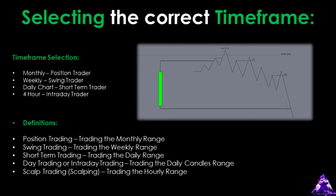Starting with the higher time frames, the first is the monthly chart or monthly time frame. The monthly time frame is primarily used for position trading, which involves trading with ranges on the monthly chart. Since it takes an entire month to form a single candle, most traders don't have the patience to wait for setups that could take years to materialize. We can still use it to establish a higher time frame directional bias, draw on liquidity, and gain insights into future potential price movements. The key takeaway is that the monthly time frame helps us get a broader market perspective, even if we aren't position traders.